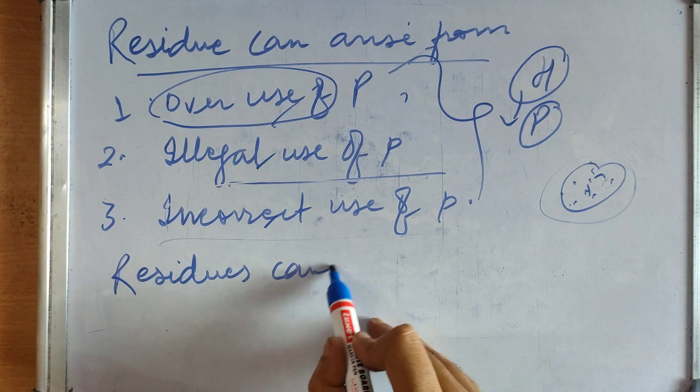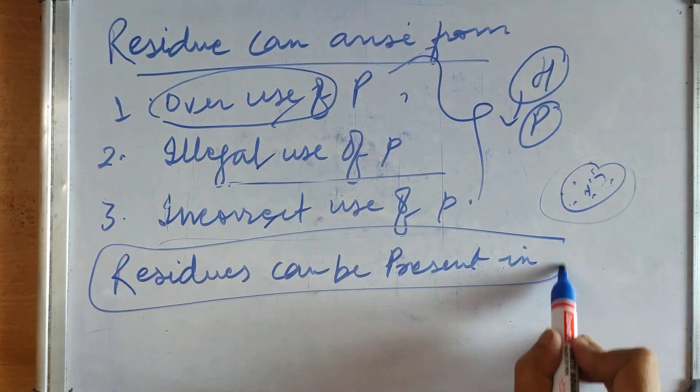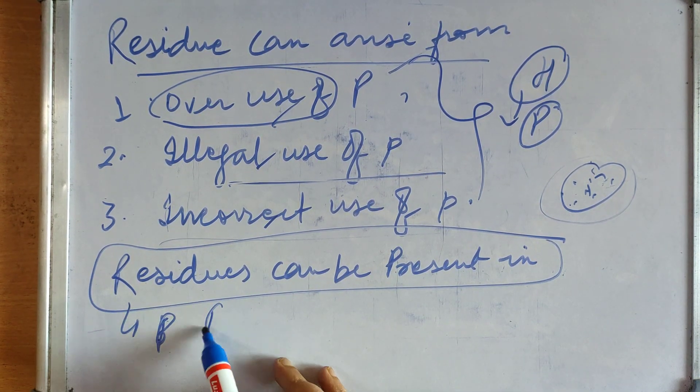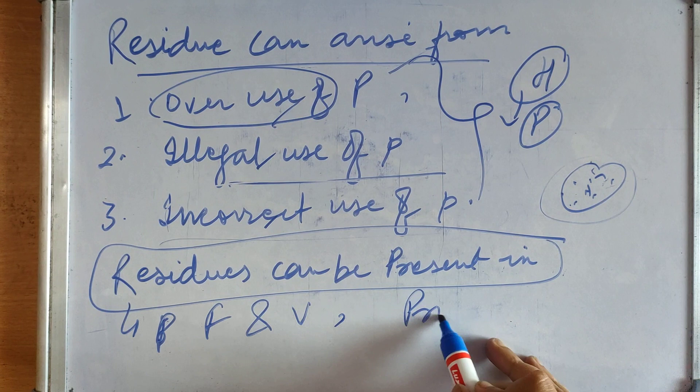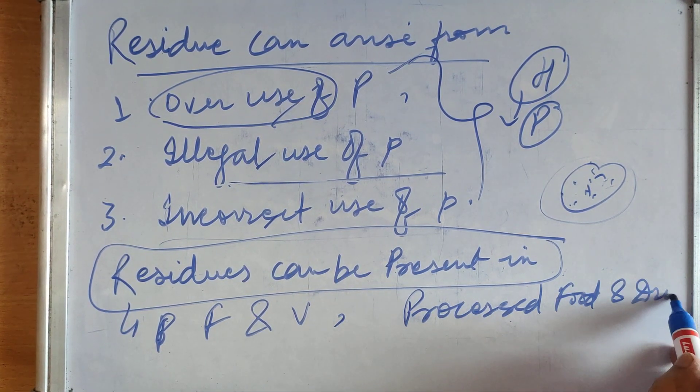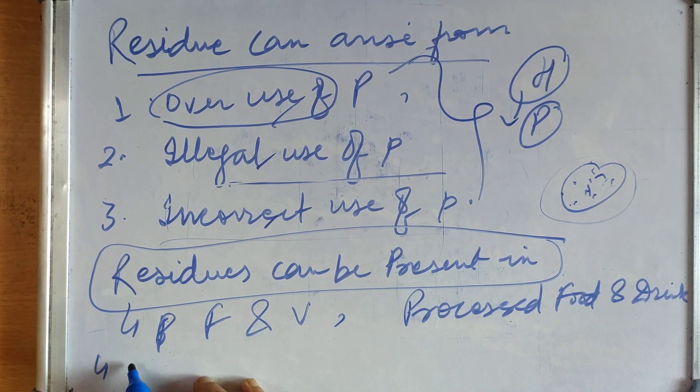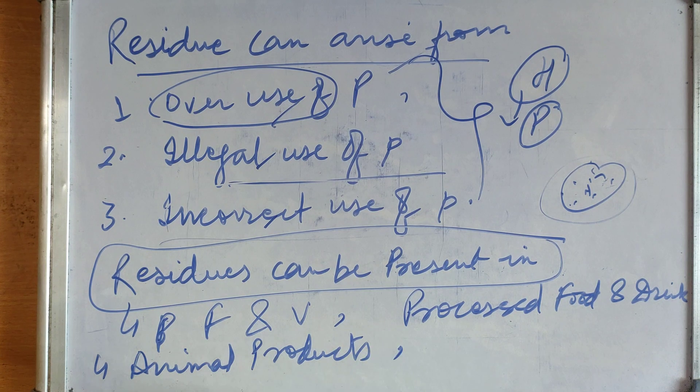Now, where these residues can be present? These residues can be present in fresh or tinned fruits and vegetables, in processed food and drink made from that crop. It can be present in animal products, fresh or processed animal products which feed on those crops.